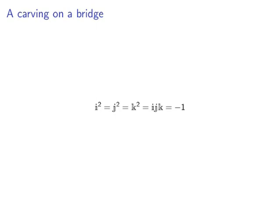Then one day, inspiration hit. On October 16, 1843, Hamilton and his wife were out for a walk. As they crossed over what is now known as Broom Bridge, he realized how to solve the problem, and he was so excited he carved his solution into the soft stone of the bridge, which is why we know the exact date he discovered this.